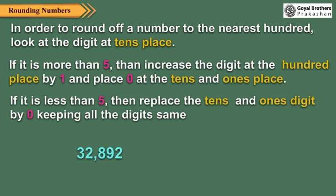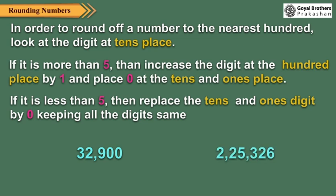Let us see examples. Here, nine is greater than five. So replace the one's and tens digit by zero and increase the hundreds digit by one. Here, two is less than five. So replace the one's and tens digit by zero, keeping all the digits the same.